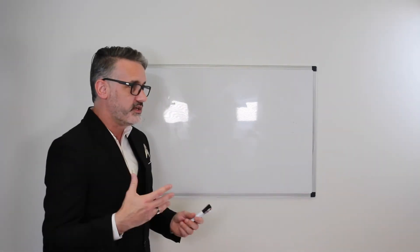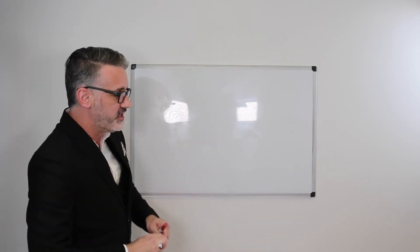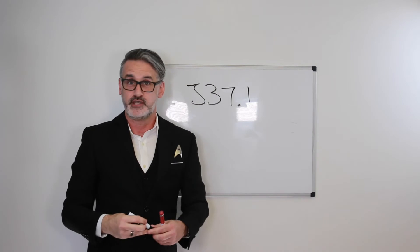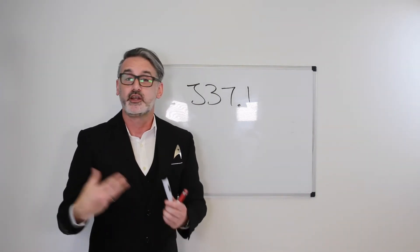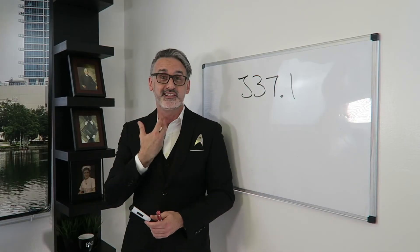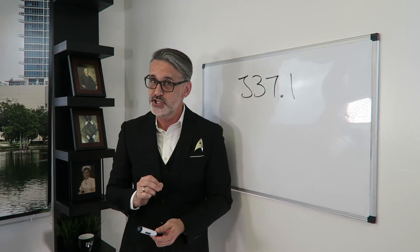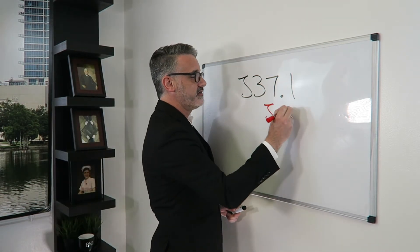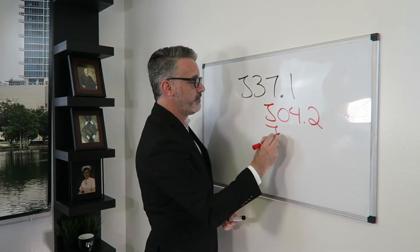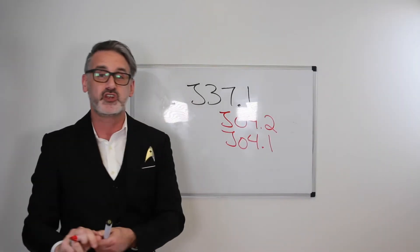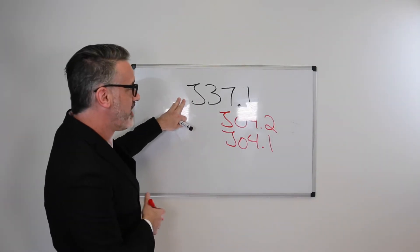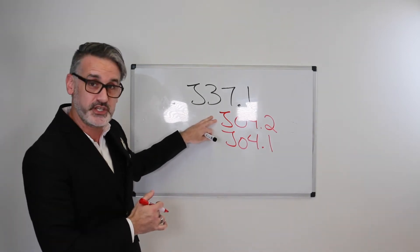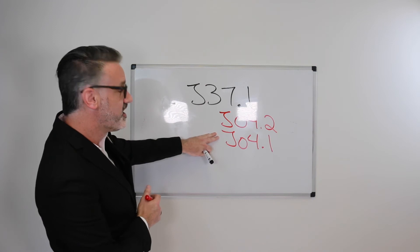For example, if we look up J37.1, that would be chronic laryngotracheitis — chronic inflammation of the larynx and trachea. But then we have Excludes 2 with J37.1. The Excludes 2 options are J04.2 and J04.1. So under J37.1, chronic laryngotracheitis, Excludes 2 gives us acute laryngotracheitis for J04.2 and acute tracheitis for J04.1.